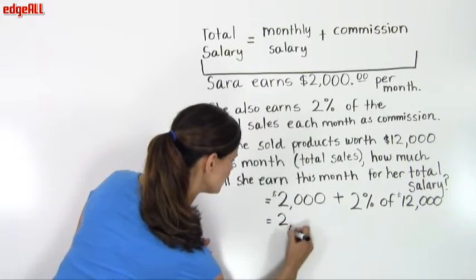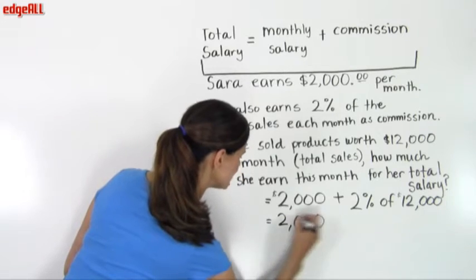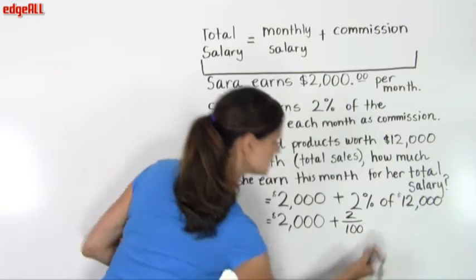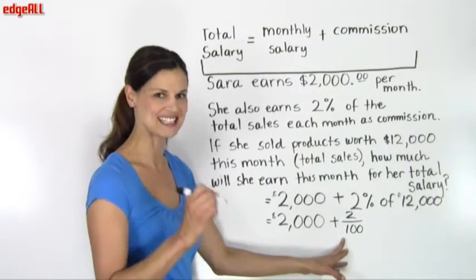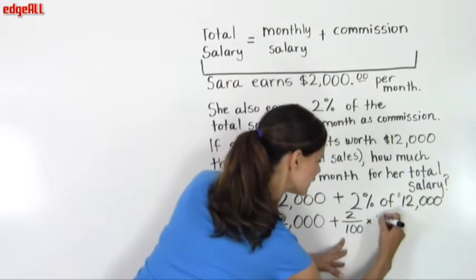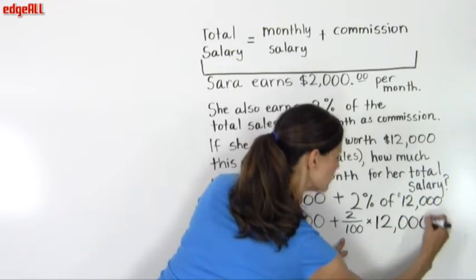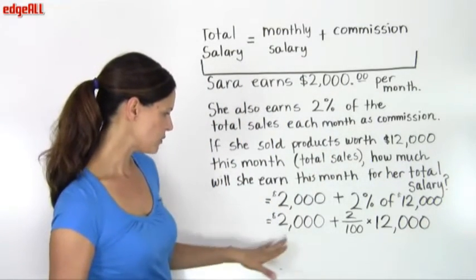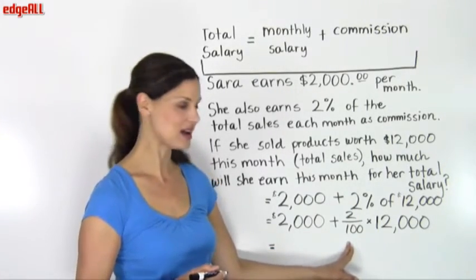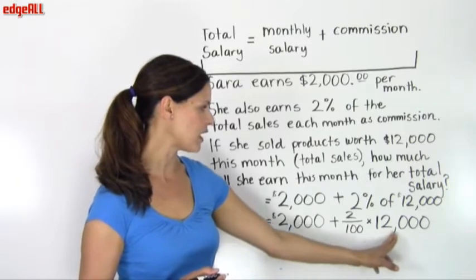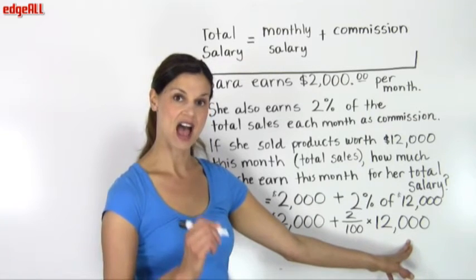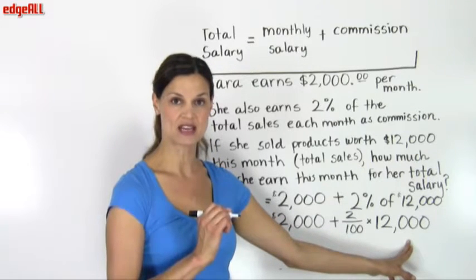We've got $2,000 for her basic salary here, plus we have 2% or 2 hundredths, or 0.02 times, because we're finding this of 12,000, so times 12,000. When we do the calculations on this, we find that 0.02, which is 2 hundredths, times 12,000 equals 240. So 2% of 12,000 is 240.